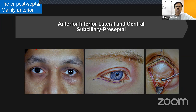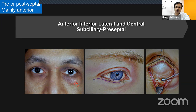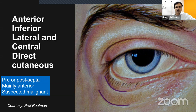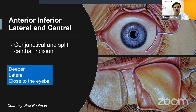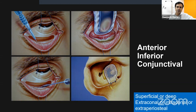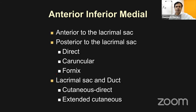A transcutaneous or sub-ciliary incision can also be used for preceptal lesions. A lower lid crease or pretarsal incision is an option in this situation as well. A direct approach is used for suspected malignant lesions. A combined conjunctival and split canthal T-shaped incision — conjunctival incision just short of the lateral fornix plus lateral canthotomy — is good for deeper lateral lesions close to the eyeball. The anterior inferior conjunctival fornicial incision is used for orbital fracture repair and can also remove tumors.